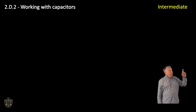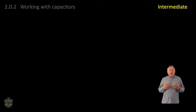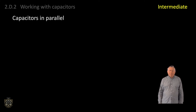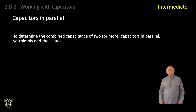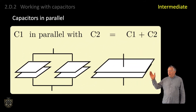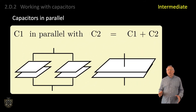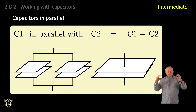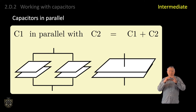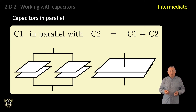Starting at intermediate licence level and looking at capacitors in parallel. To determine the combined capacitance of two or more capacitors in parallel, you simply add the values. The graphic shows two identical capacitors, C1 and C2, in parallel. Imagine that these capacitors are moved horizontally together until the plates touch. The result is they merge into a single capacitor, shown on the right, with twice the plate area of the individual capacitor.